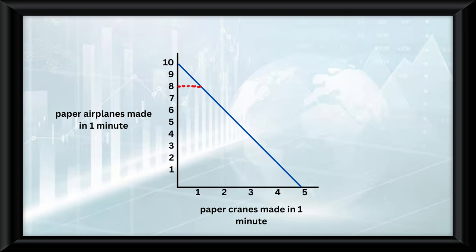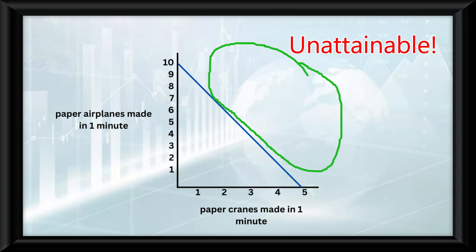So if I wanted to make 8 paper airplanes in a minute, the trade-off would be not making 4 paper cranes. Any production made below the curve, like 2 paper airplanes and 1 paper crane, would be inefficient. Anything on the line is efficient, and anything outside the curve is virtually unattainable because of scarcity.